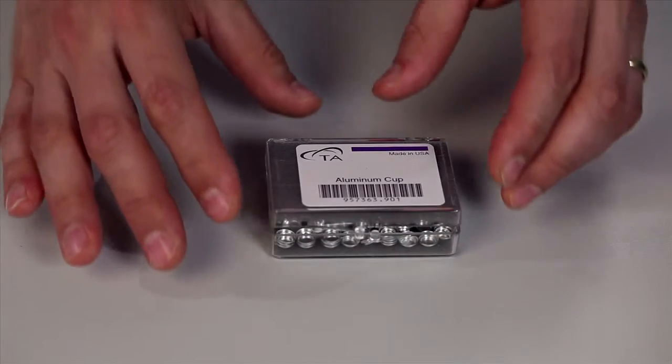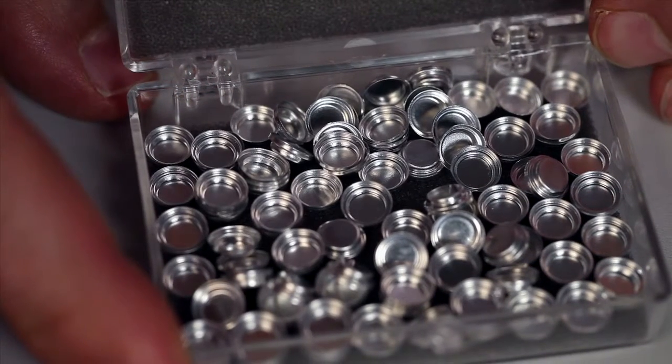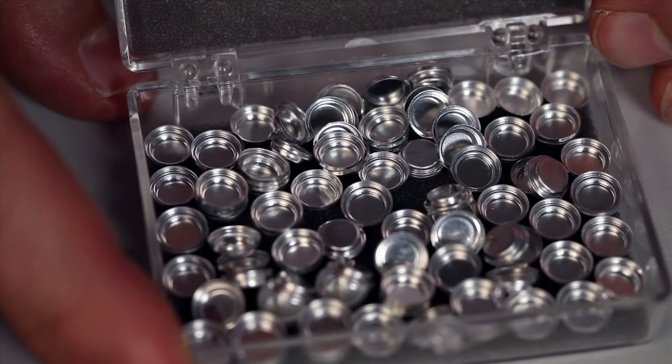Disposable aluminum pens are good up to 600 degrees Celsius for materials for which alumina and platinum pens cannot be used.